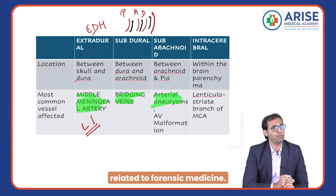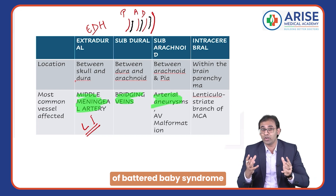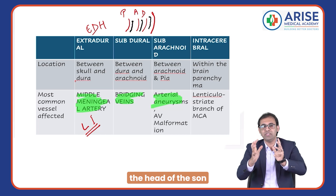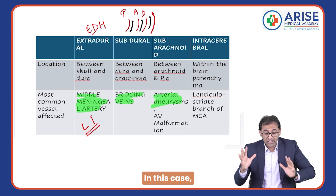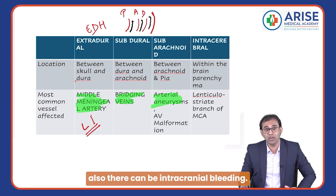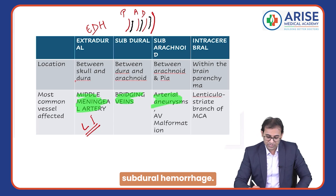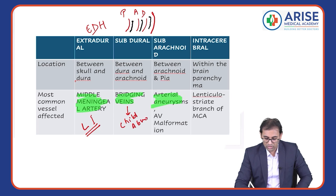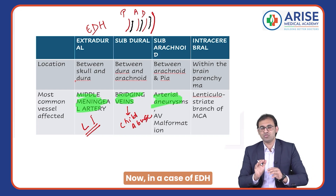Now let's discuss forensic medicine. In a case of child abuse — battered baby syndrome — when an angry father holds the baby's head and shakes him, this is called shaken baby syndrome. In this case, there can be intracranial bleeding. In a case of child abuse, the hemorrhage you expect is subdural hemorrhage. Remember: in child abuse, you see subdural hemorrhage.